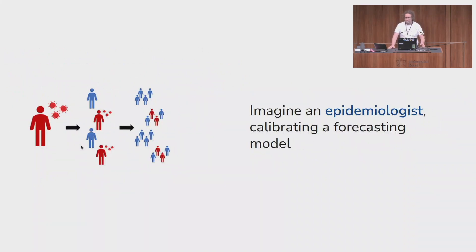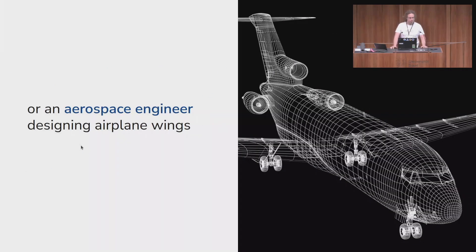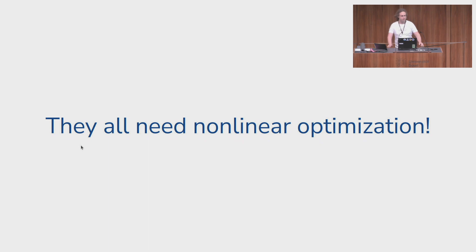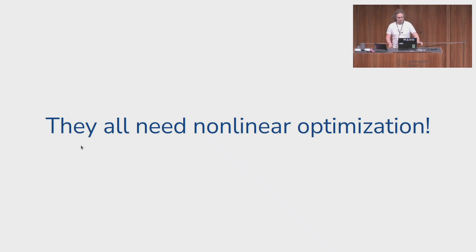Imagine, for example, epidemiologists who are calibrating a forecasting model — this happened a lot during COVID — or a statistician fitting a curve to data, or an aerospace engineer designing a new wing for an airplane. What all of these have in common is they have to do nonlinear optimization, but they are not really trained in this and would much rather spend time thinking about aerodynamics or making their model more realistic.